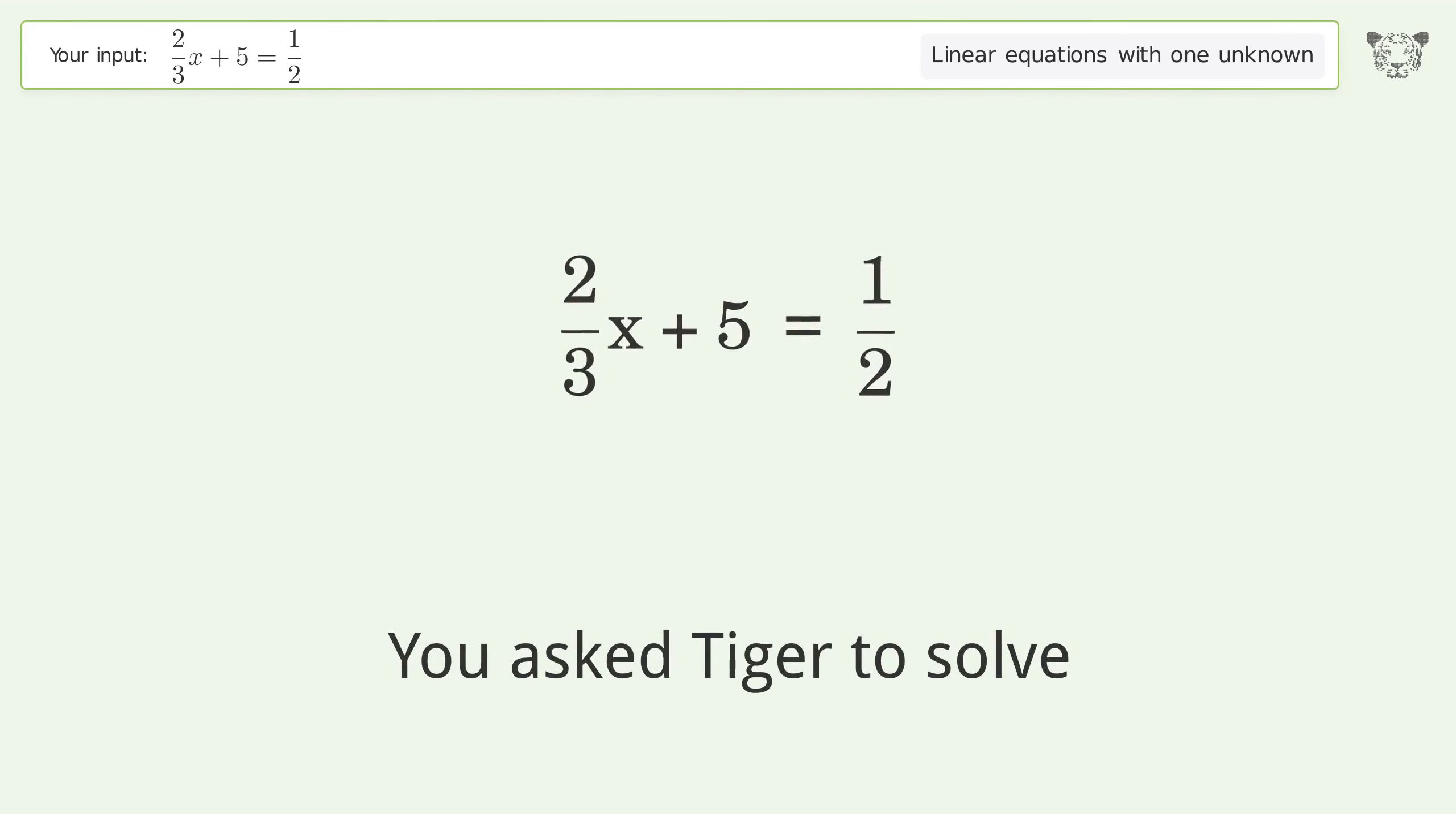You ask Tiger to solve this, which deals with linear equations with one unknown. The final result is x equals negative 27 over 4.